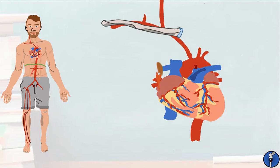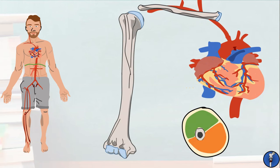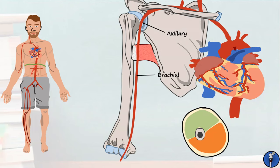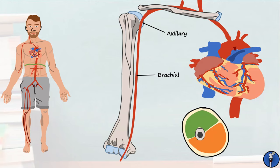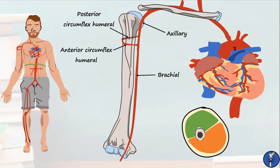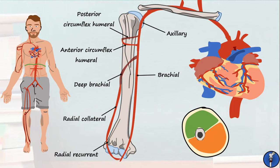Let's follow the subclavian artery into the arm. The proper name for our armpit is the axilla, so as this artery passes through the armpit it is known as the axillary artery. It continues down the medial aspect of the arm and at the level of teres major it becomes known as the brachial or arm artery, which supplies the anterior compartment of the arm. The axillary artery produces two important branches known as the posterior and anterior circumflex humeral arteries, which supply blood to the neck of the humerus. The brachial artery produces a branch known as the deep brachial or profunda brachii artery, which supplies the posterior compartment. This continues down the lateral arm as the radial collateral artery and then the radial recurrent artery. On the medial side, the brachial artery produces a branch that travels around the back of the elbow, known as the superior ulnar collateral artery.